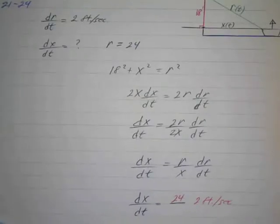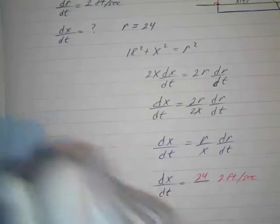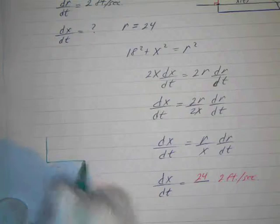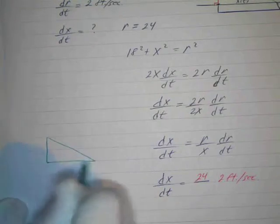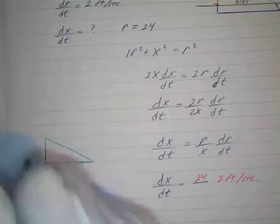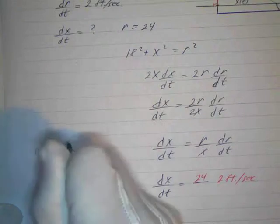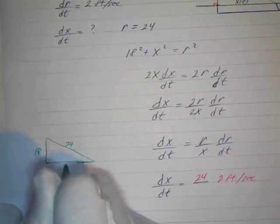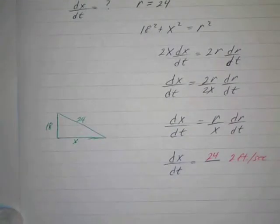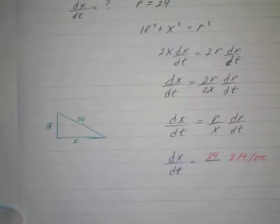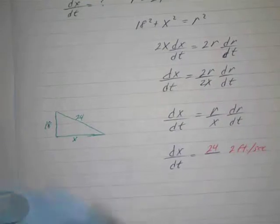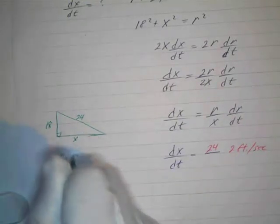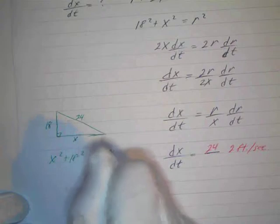So again, we know these numbers are going to always be in this Pythagorean relationship, so we'll draw another right triangle over here. And this is always 18, and this is going to be, at this moment, 24. And we want to figure out what x is. All right, so we use our Pythagorean theorem because it's a right triangle.